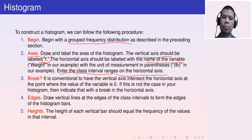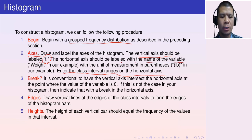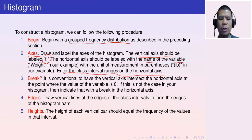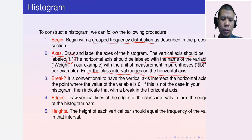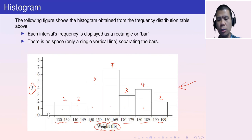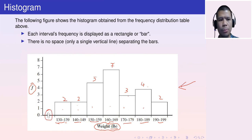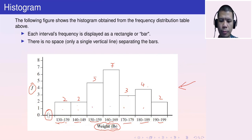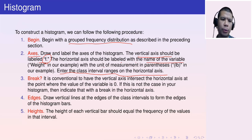Step three: consider whether a break is needed. It is conventional for the vertical axis to intersect the horizontal axis at zero. If the data does not start at zero — as in our case where intervals begin at 130 — add a break sign on the horizontal axis to indicate the gap.